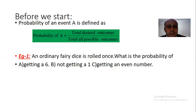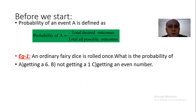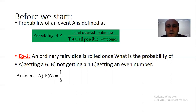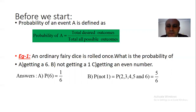A fair dice has 6 faces and only one 6, so total desired outcomes is 1 and total possible outcomes is 6. The answer is 1 over 6. For not getting a 1, the possible numbers are 2, 3, 4, 5, 6 — so total desired outcomes is 5 and total possible outcomes is 6. The answer is 5 over 6.